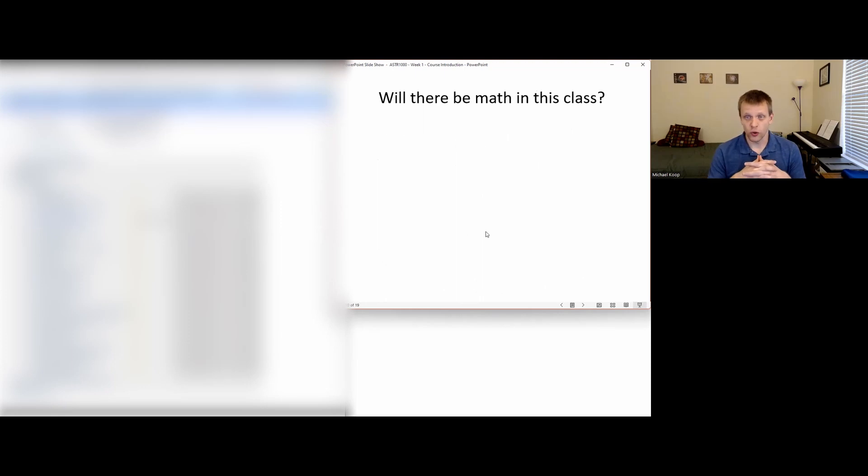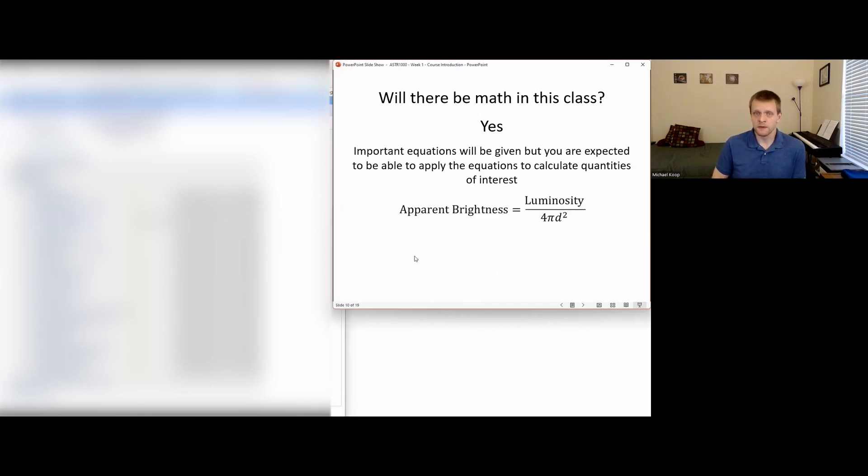So a couple other things about this course. First, will there be math in this class? Yes, there is going to be math. For example, one of the equations that we're going to be looking at later is the apparent brightness equation. Apparent brightness, basically how bright an object appears to be to your eye, is equal to the luminosity, basically how much light energy is this thing giving off, divided by 4π times the distance to that source squared.